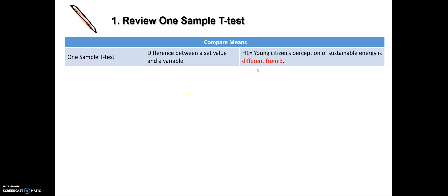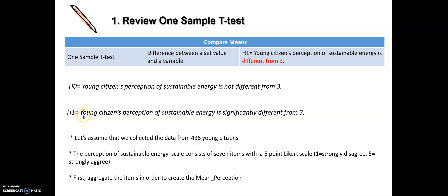Let's proceed with a real example. Our null hypothesis is: young citizens' perception of sustainable energy is not different from three. The alternative hypothesis H1 is: young citizens' perception of sustainable energy is significantly different from three. The perception of sustainable energy is our sample mean, and we compare it with the known or set value of three. We assume data was collected from 436 young citizens, and the perception of sustainable energy scale consists of seven items with a five-point Likert scale, where one equals strongly disagree and five equals strongly agree.